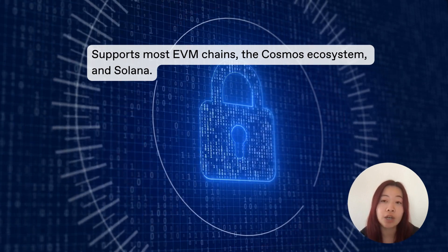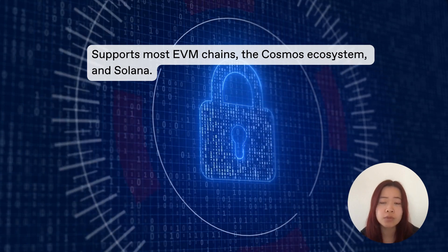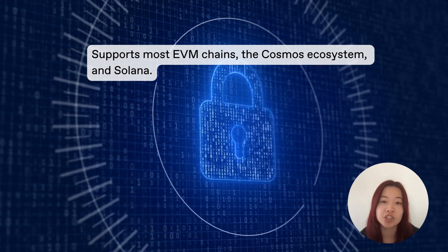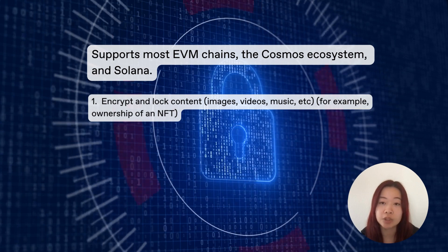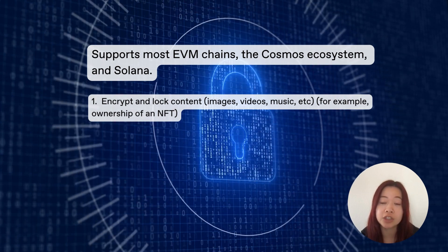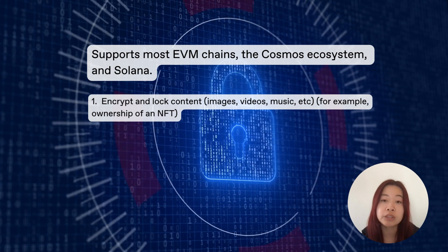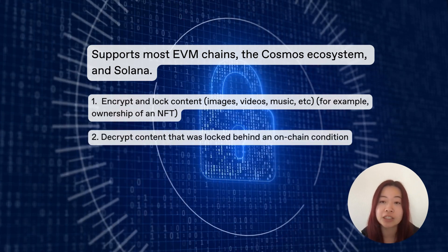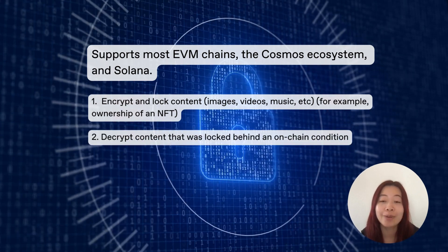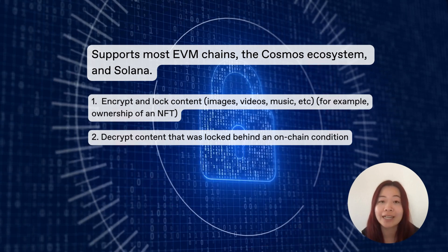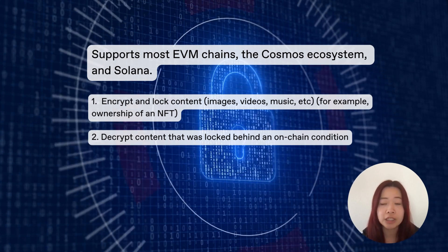With LIT, you can use on-chain access control conditions to perform four types of actions. One: encrypt and lock content such as images, videos, and music behind on-chain conditions like ownership of an NFT. Two: decrypt content that was locked behind on-chain conditions, with that decryption key being whether or not you hold that NFT or other on-chain conditions.